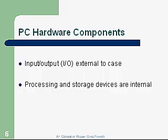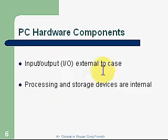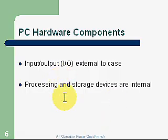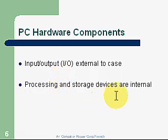PC hardware components: Input, Output — I/O — these are external to the case. We'll go over some examples of things coming into the computer. Your keyboard would be an input device; your monitor would be an output device. Processing and storage are devices that are internal to the case.